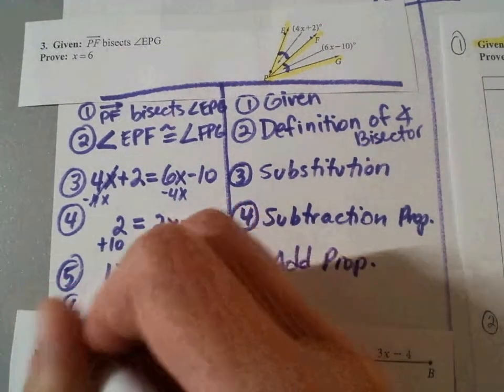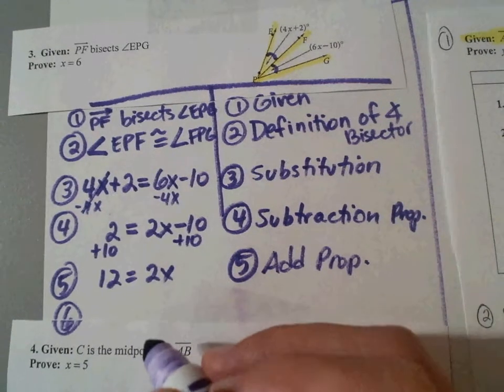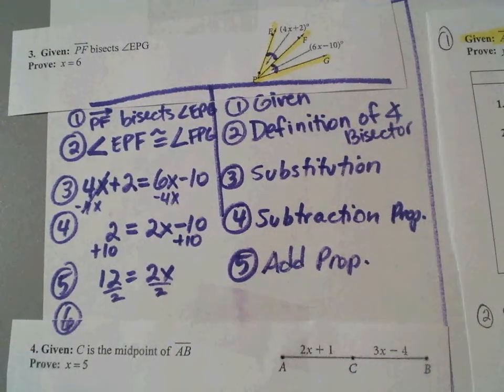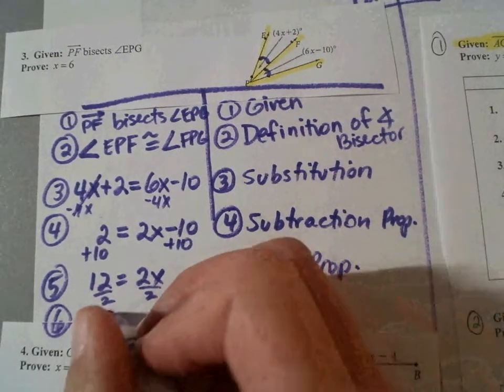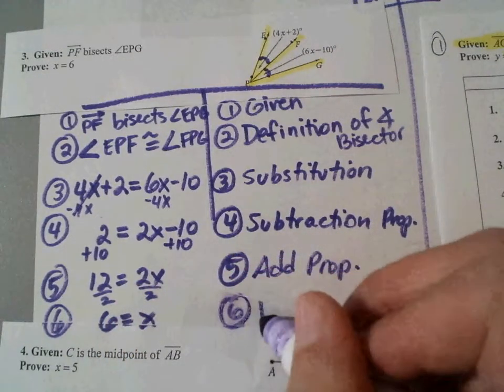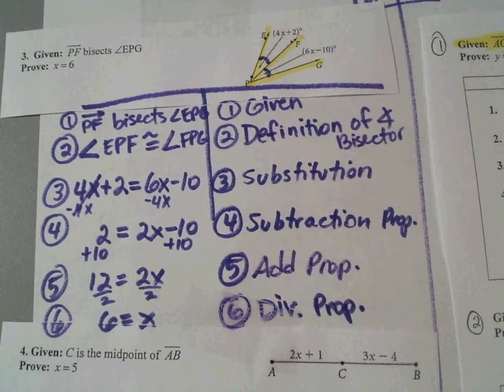Okay. We're on our last step. Step 6. Last step is divide. Very good. So if you divide both sides by 2, don't get in the habit of moving your X. Leave your X where it is. What's 12 divided by 2? 6 equals X. So step number 6 is the division property. And is that what we wanted to prove? Yes. Okay. Good. All right. So we are out of time.